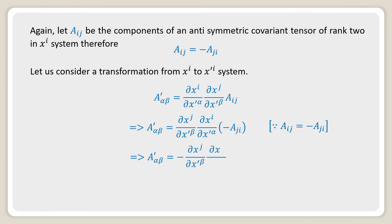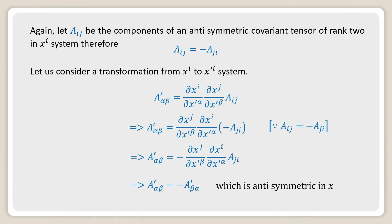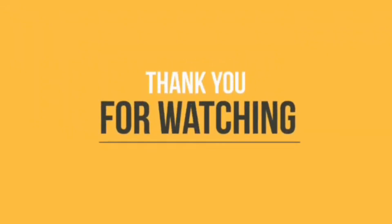This implies a'_{αβ} = (∂x^j / ∂x'^β) · (∂x^i / ∂x'^α) · a_{ji}, which implies a'_{αβ} = −a'_{βα}, which is anti-symmetric in the X'^i system. Thank you very much.